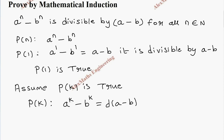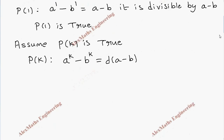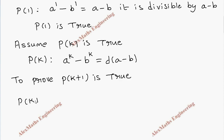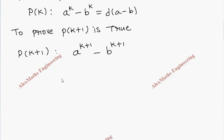Now we need to prove P(k+1) is true. The P(k+1) expression is a^(k+1) minus b^(k+1). We have to prove it is divisible by (a - b). We take this expression and write it as two parts.